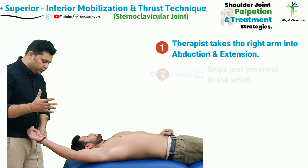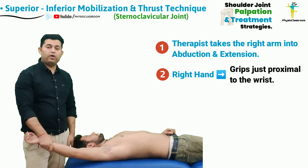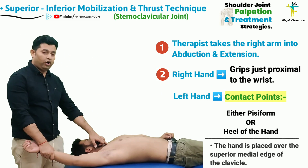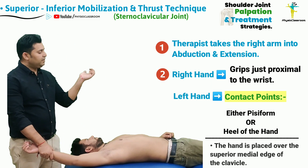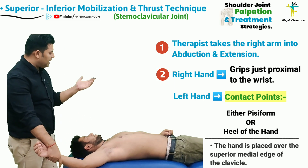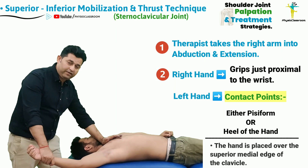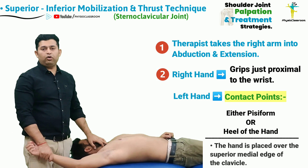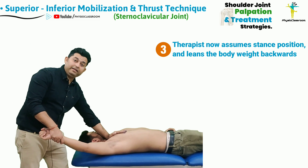The therapist is first going to take the affected side arm into the position of abduction and extension. From here, the therapist is going to grab the patient's right arm with the right hand just proximal to the wrist joint. The contact point for mobilization or thrust is going to be either the pisiform or the heel of the hand.